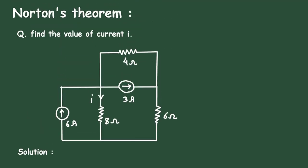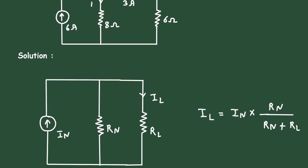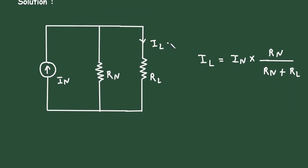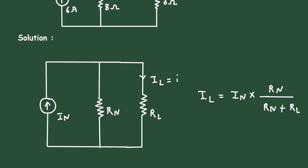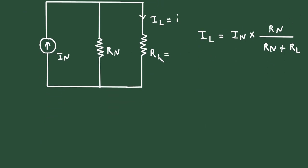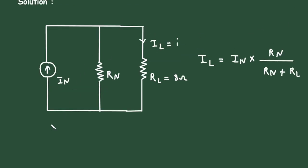Now here in this question, this I is the load current — this is what we have to find. So we can write Il = small i, and this 8 ohm will be the load resistor Rl. So Rl = 8 ohm. This circuit is called Norton's equivalent circuit.